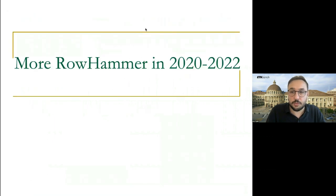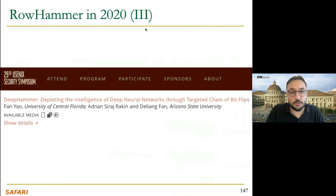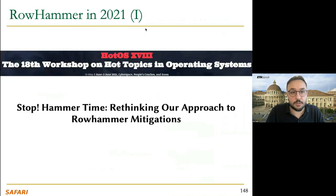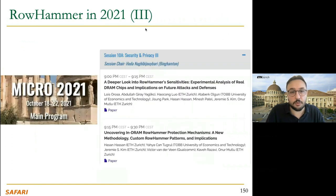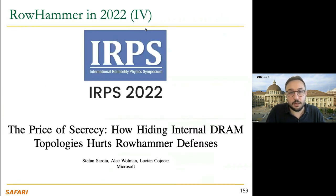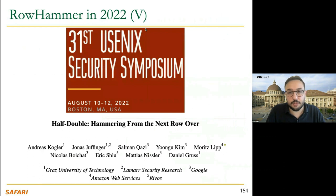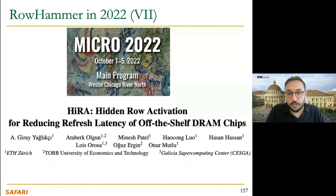Between 2020 and 2022, we see many papers in top conferences such as MICRO, Security and Privacy, USENIX Security, HotOS, IEEE Security and Privacy, HPCA, IRPS, CCS, and MICRO again. I'd like to highlight one more work from our group called HIRA — Hidden Row Activation — where we found a new operation that commodity DRAM chips support to reduce the refresh latency of the DRAM chip.